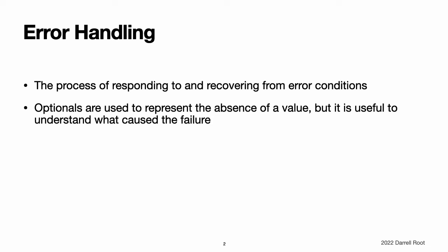As an example, consider the task of reading and processing data from a file on disk. There are a number of ways this task can fail, including the file not existing at the specified path, the file not having read permissions, or the file not being encoded in a compatible format. Distinguishing among these different situations allows a program to resolve some errors and to communicate to the user any errors it cannot resolve.